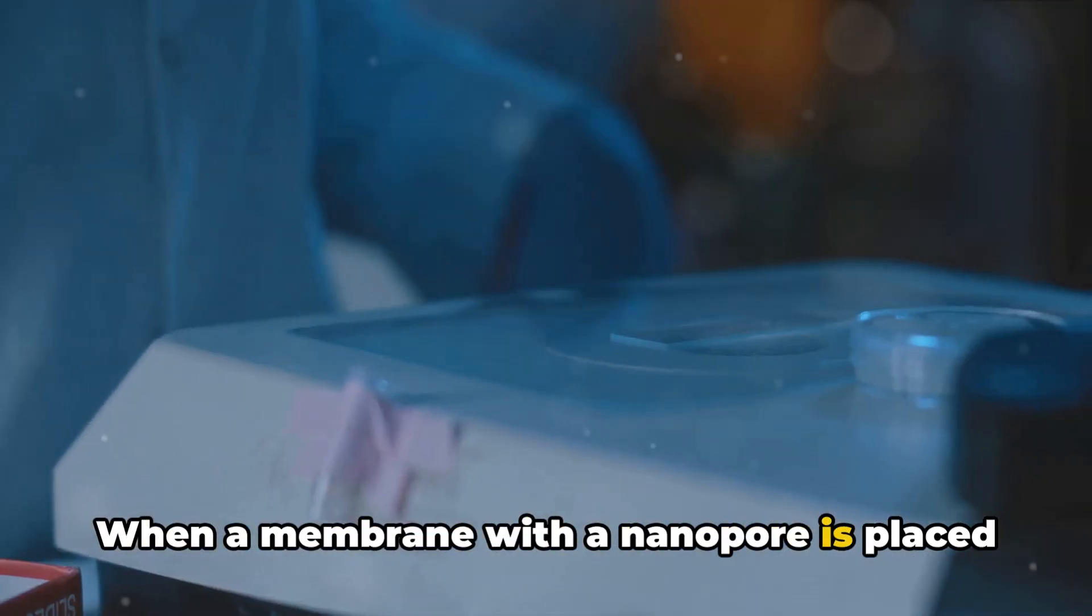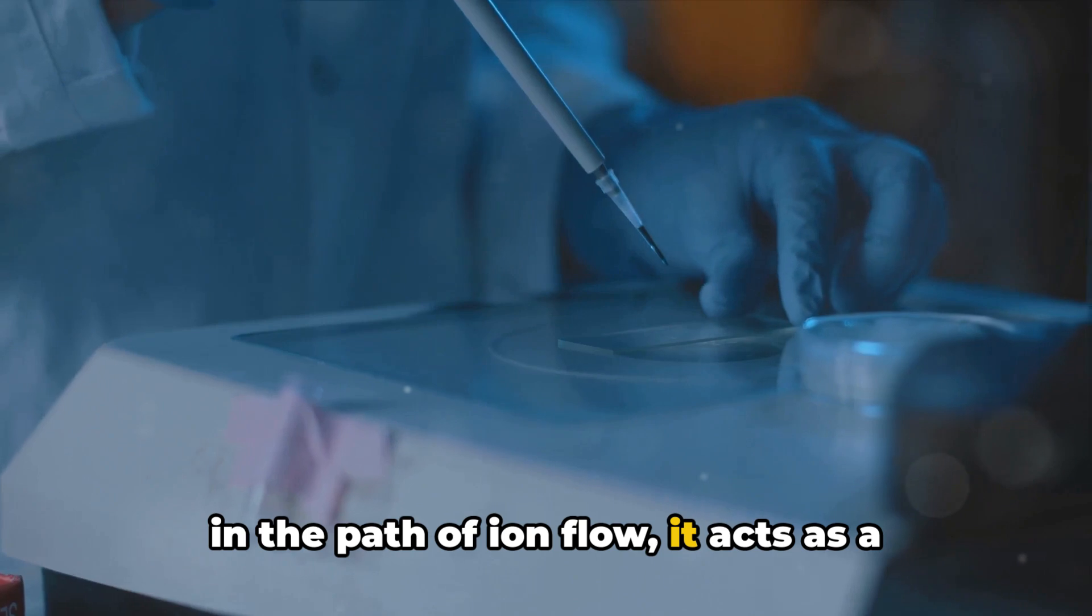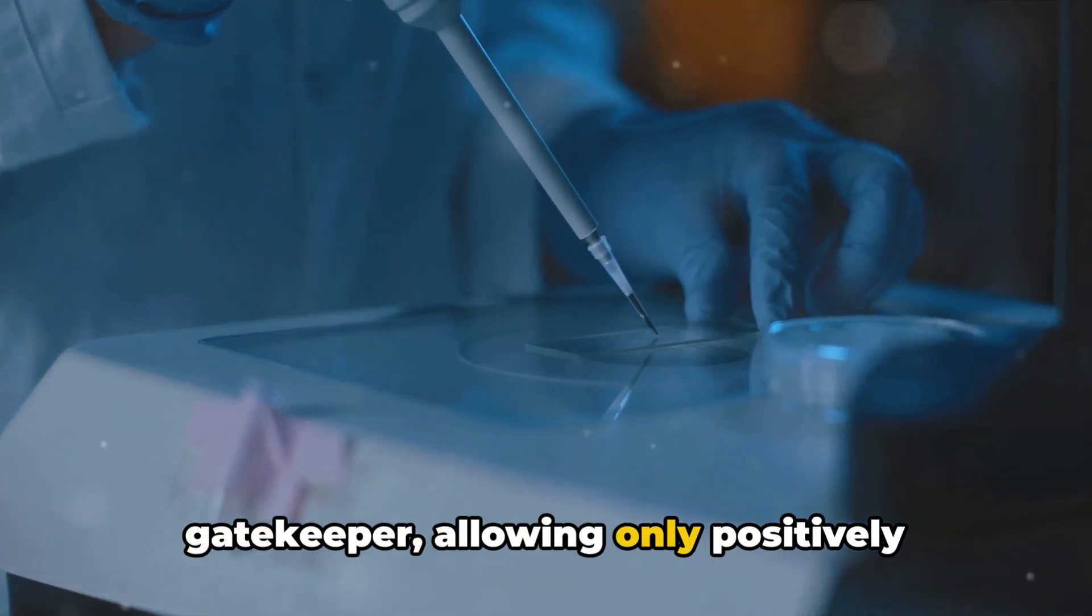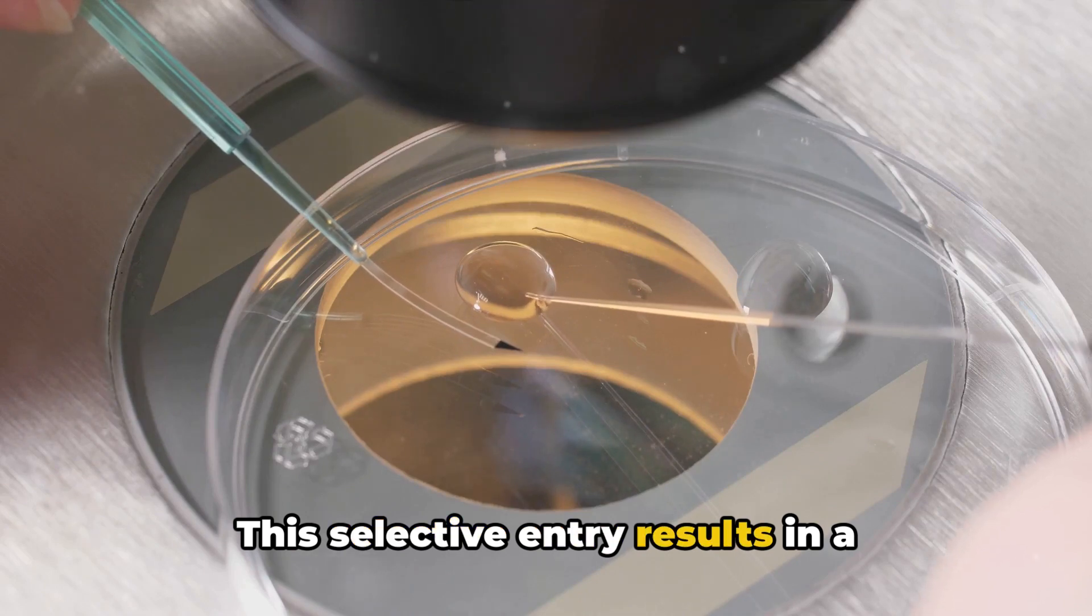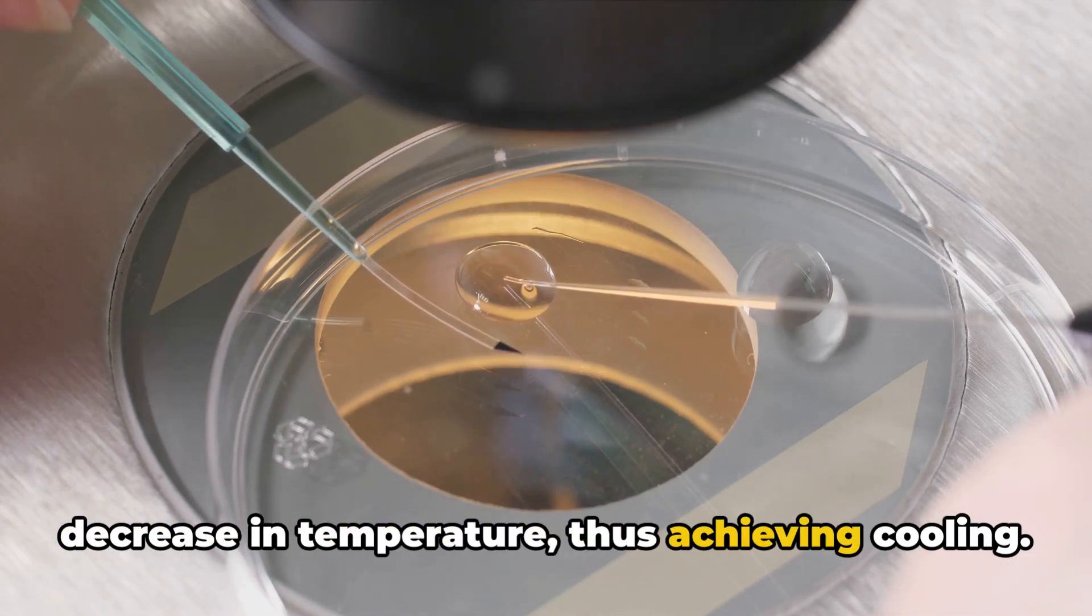When a membrane with a nanopore is placed in the path of ion flow it acts as a gatekeeper allowing only positively charged ions to pass through. This selective entry results in a decrease in temperature thus achieving cooling.